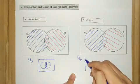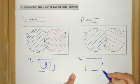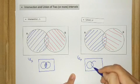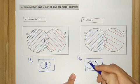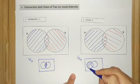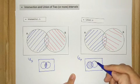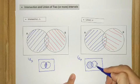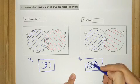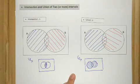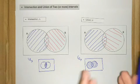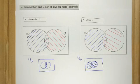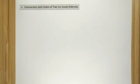The answer should be the combined region. We have set A and set B, and we consider all the elements that belong to either A or B. So for union, the keyword is 'all', and for intersection, the keyword is 'and', which means it belongs to both A and B. So: intersection → both; union → all. Let's go back to our main discussion.